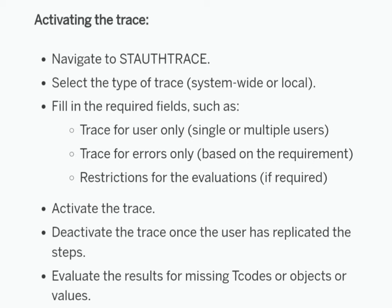To activate the trace in ST/AUTH TRACE, go to the T-code, select the type of trace — either system-wide or local — and fill in the fields for a single user or multiple users. Check the option you want: trace for errors only or complete trace. Apply any other restrictions if needed, then activate. Once the user has replicated the activity, you can deactivate and then evaluate the results.